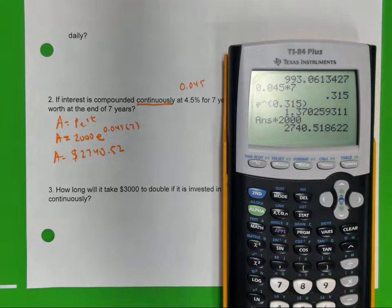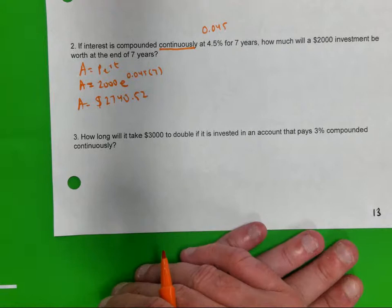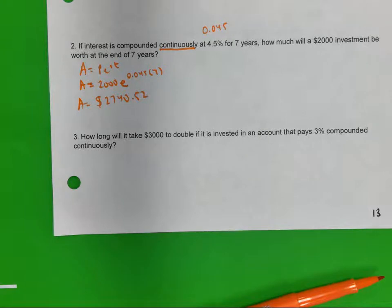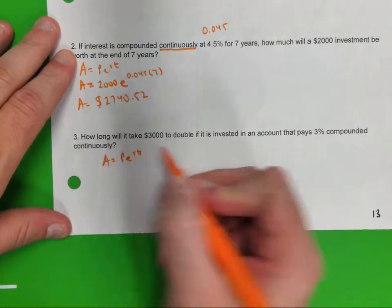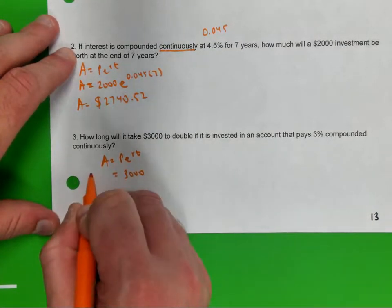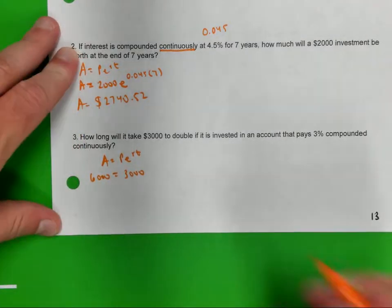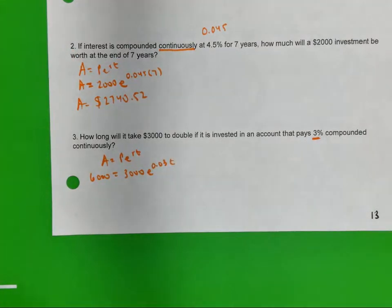All right, let's look at number three. It said, how long will it take $3,000 to double if it is invested in an account that pays 3% compounded continuously? Well, this one's a little different, isn't it? We got our starting amount is what? $3,000. We want to know how long it takes to get how much. So they kind of gave me my answer here. So in this formula, A equals P times E raised to RT, my principal is $3,000. I want to know how long it takes to get... When it says how long will it take, you're looking for T. T. How long you're looking for T. My interest rate is 3%, so how am I going to write that? 0.03.